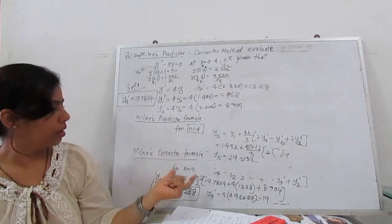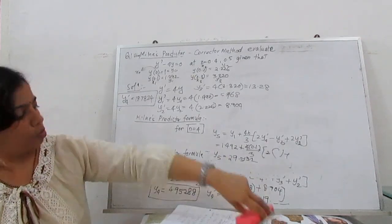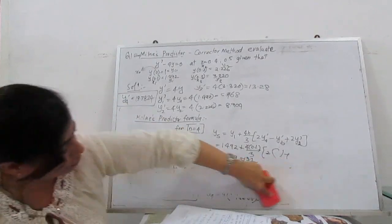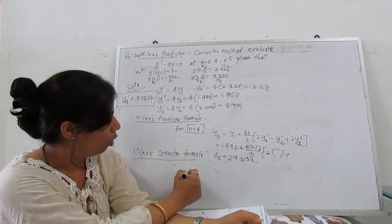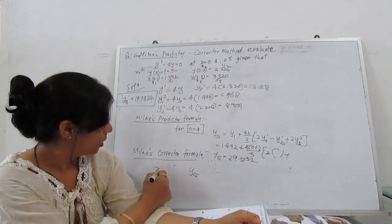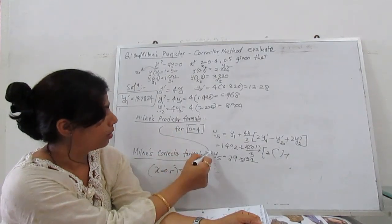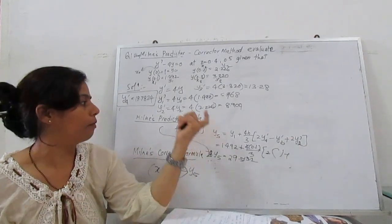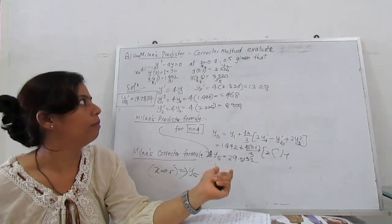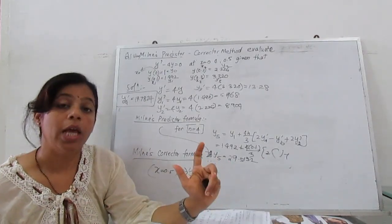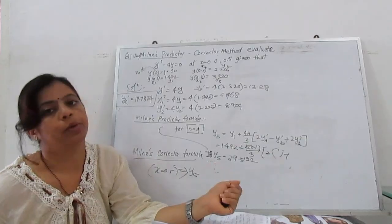Now this is your y₅. Correct with corrector formula using n = 4. When you correct this value with corrector formula, you will get the exact value of y at x = 0.5. So first we find y₅ with the help of predictor formula, then correct with corrector formula. That's the method of Milne predictor and corrector method. In this method we will find a more accurate value as compared to Runge-Kutta method.